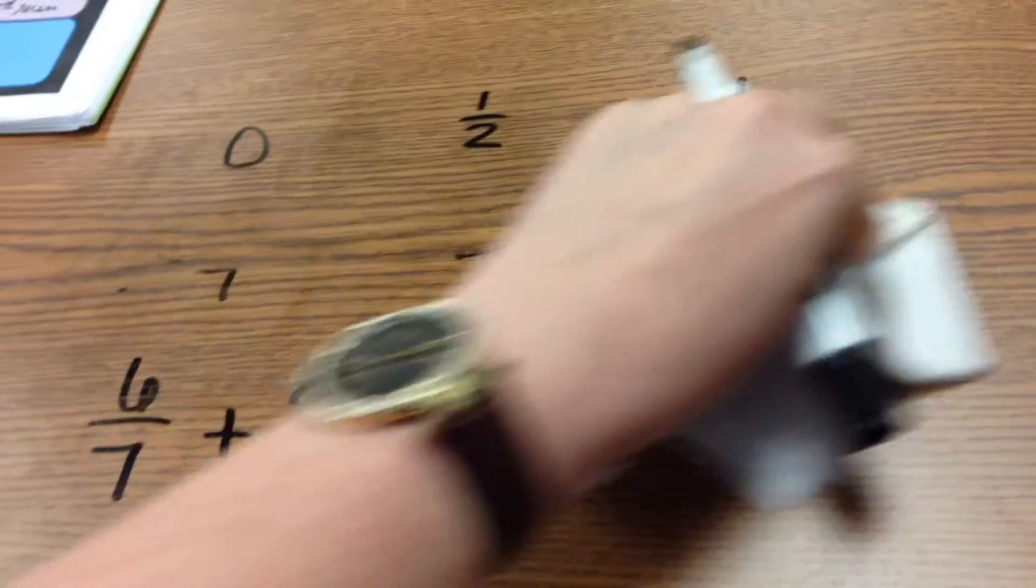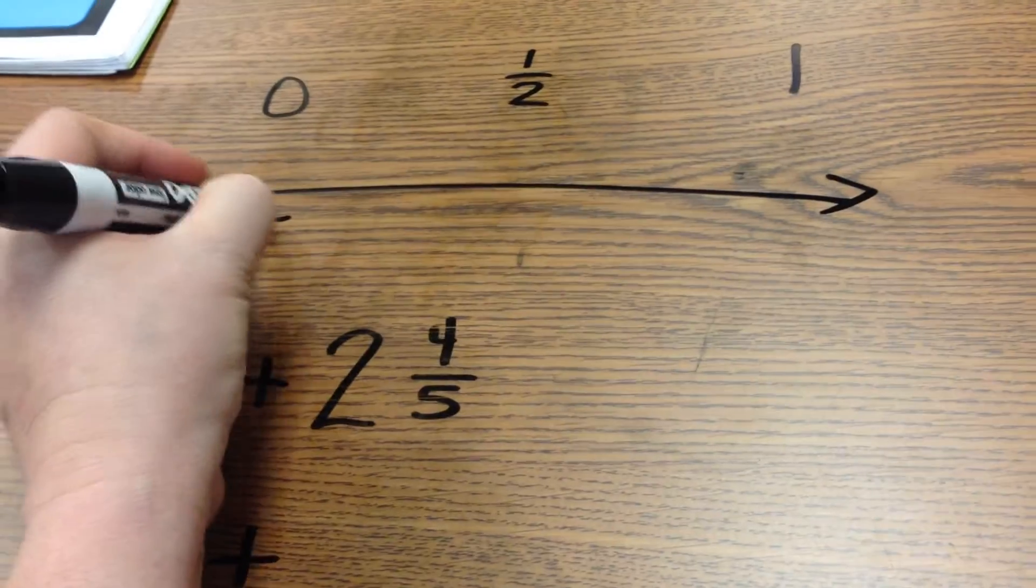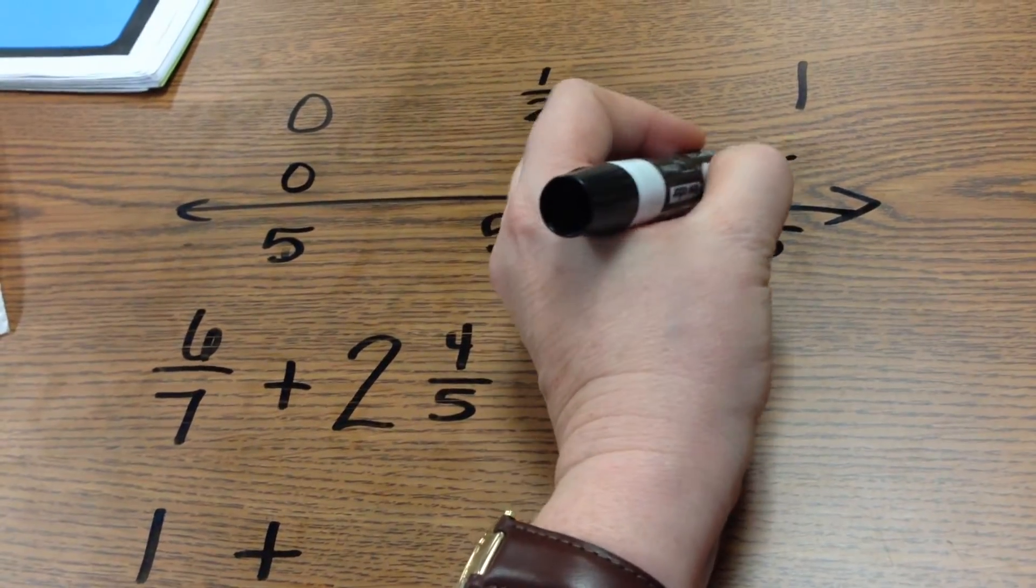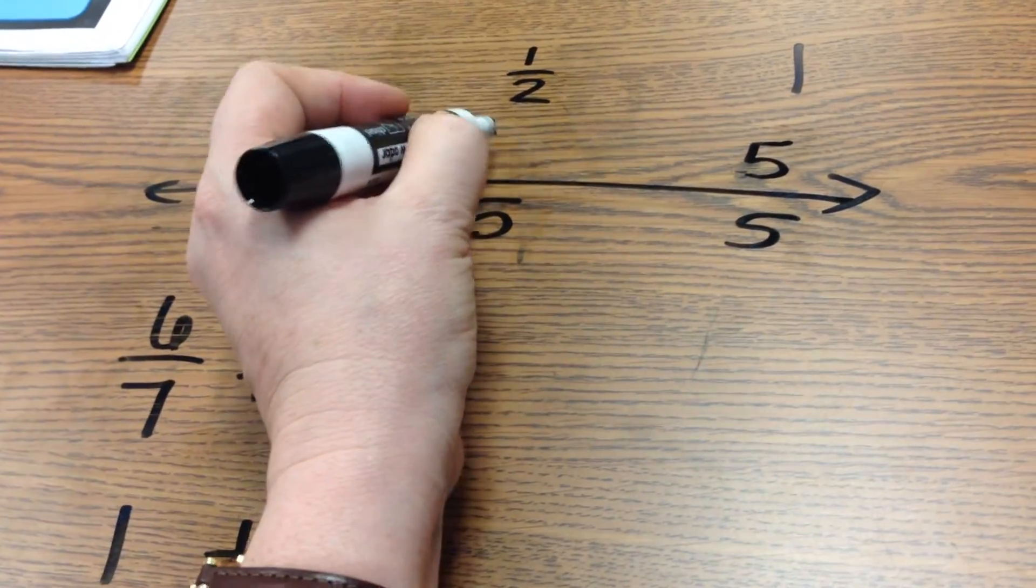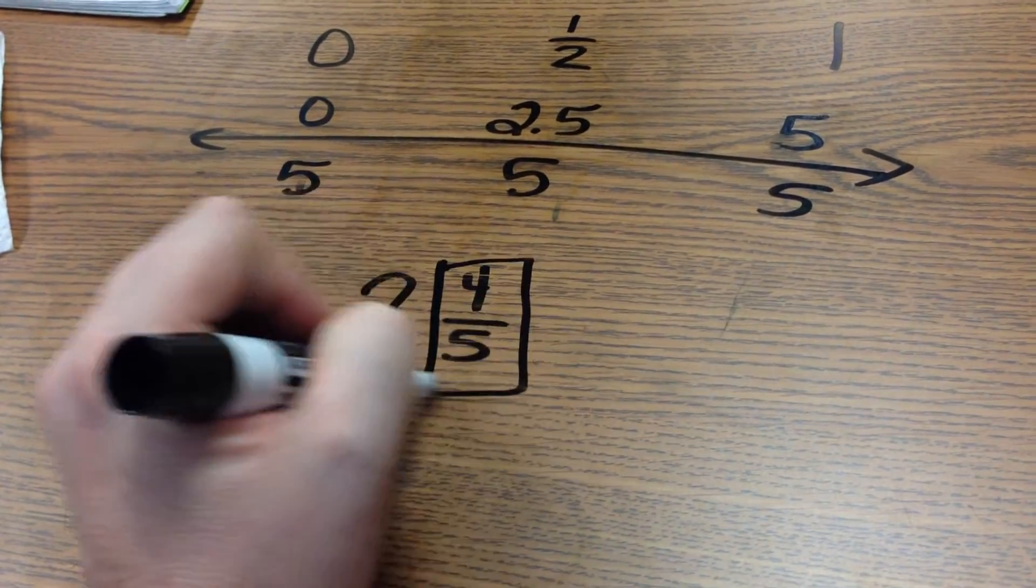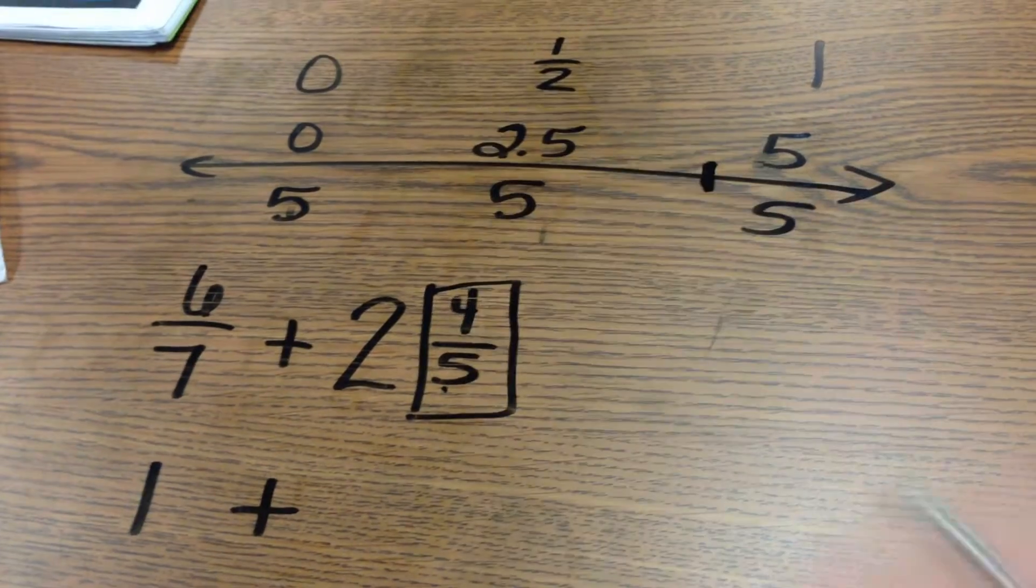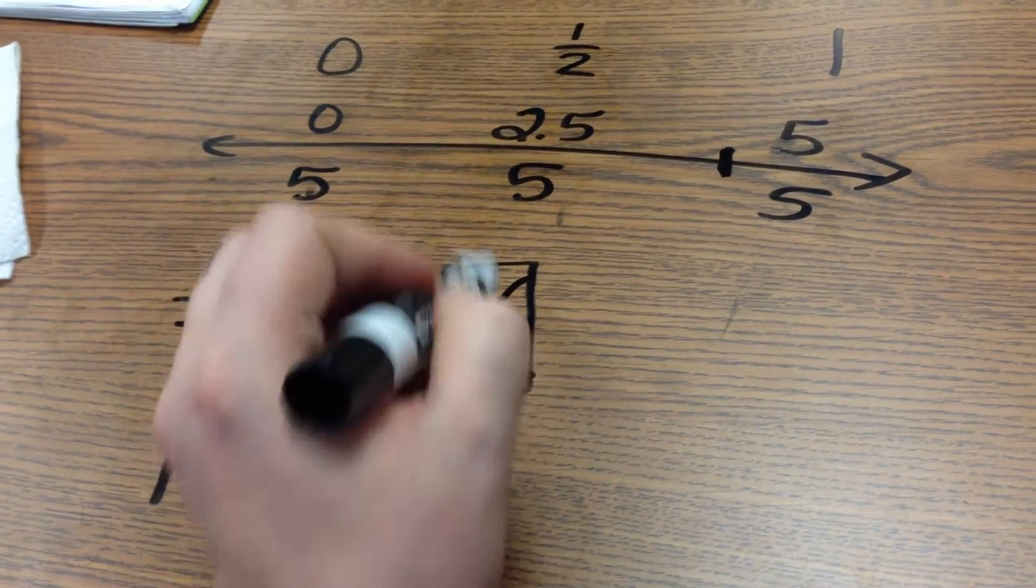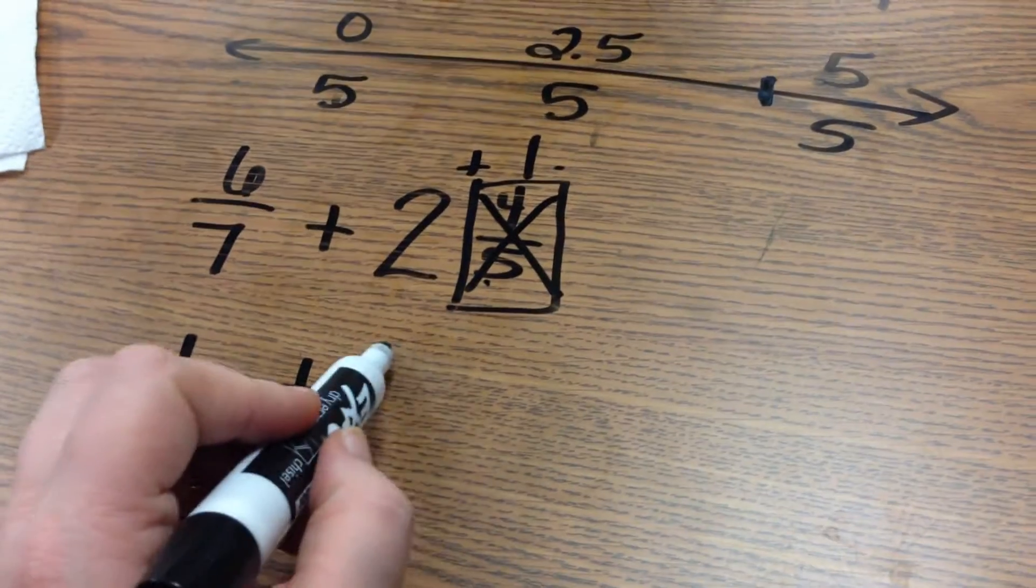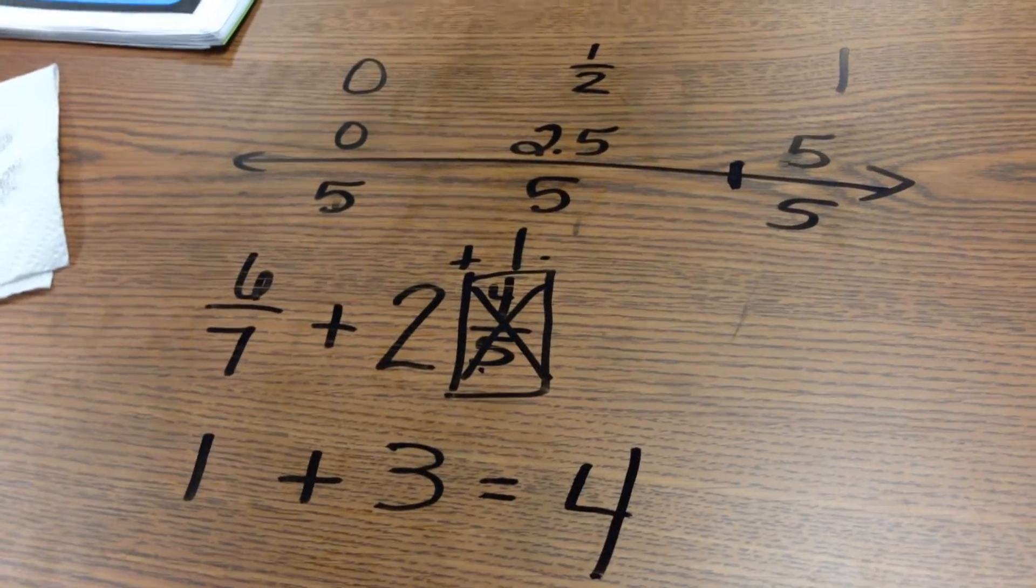Now I'm going to do fifths. Zero is equal to zero-fifths. One whole is equal to five-fifths. And then half of five is two-and-a-half. I'm only looking at the fraction part here. Four-fifths is very close to five-fifths. So this would round to one. And then two plus one would be three. And so one plus three equals four would be your estimate.